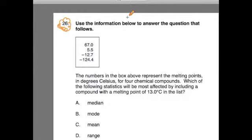Let's look at number 26. It says, use the information below to answer the question that follows. It gives us a box with numbers, data points. The numbers in the box represent the melting points in degrees Celsius for four chemical compounds. Which of the following statistics will be most affected by including a compound with a melting point of 13 degrees Celsius in the list?